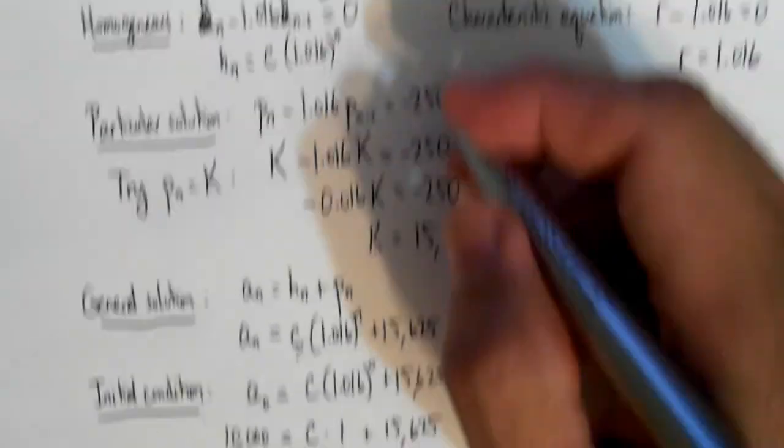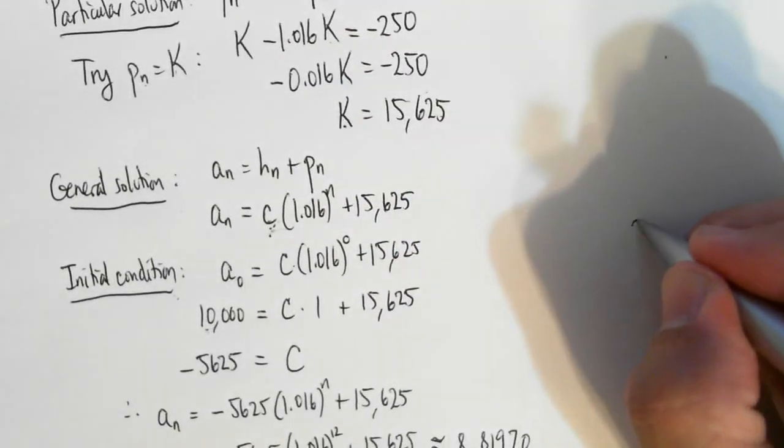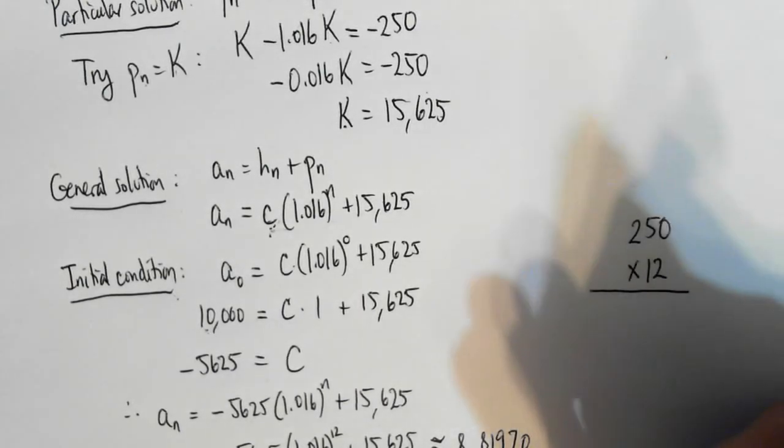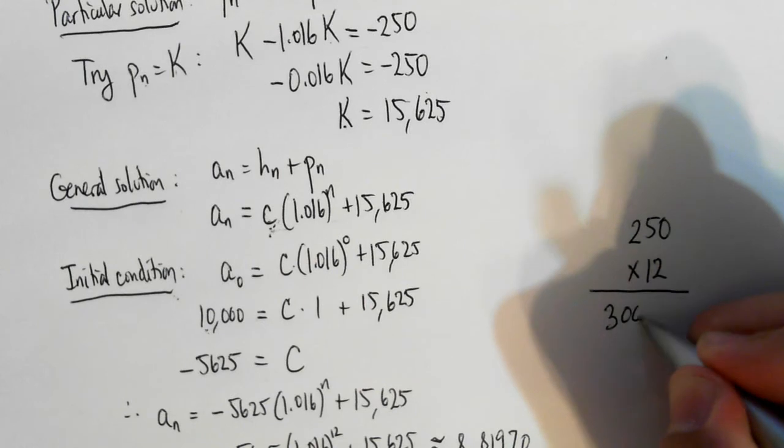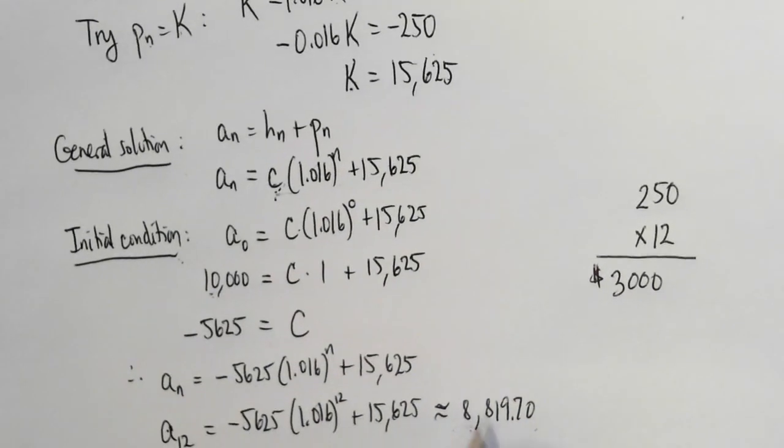Notice that we paid $250 a month. That's how much we're paying per month. So $250 a month times 12 months. So in one year, we paid $3,000 toward the loan.